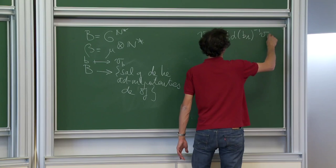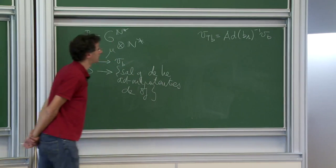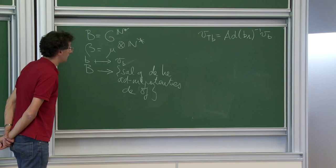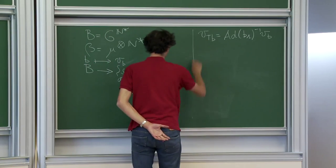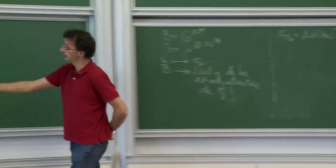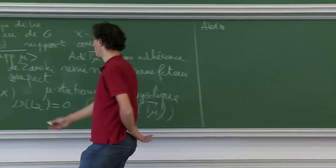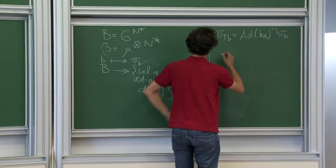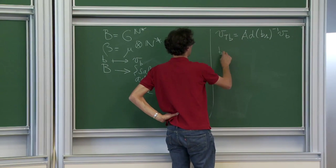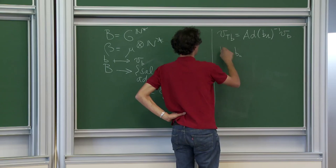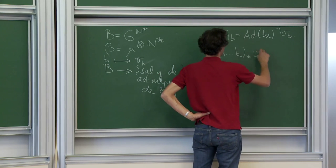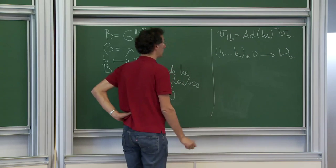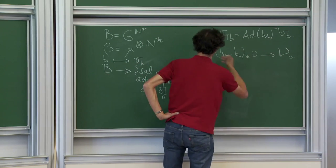Donc VTB, c'est l'action adjointe de B_1 puissance -1 appliquée à VB. Je vous rappelle aussi que dans la situation qui m'intéresse, j'ai ma mesure nu, et donc il y a des mesures limites nu_B. VB a été construite comme mesures limites. Quand je pousse la mesure nu par un mot écrit dans ce décalage, ça tend vers une mesure nu_B, qui est une mesure dépendant d'un paramètre aléatoire. Et nu_TB vérifie toujours la même relation d'équivariance que nu_B.